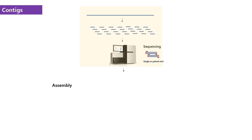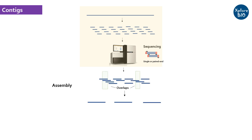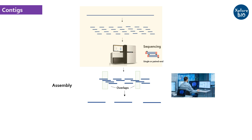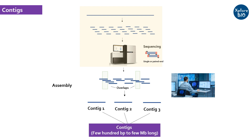The next step is to assemble these reads. The short reads are assembled to form a larger sequence based upon the overlapping regions of individual reads. This involves extensive computational power and tools to assemble the sequences. This way, we get bigger genomic sequences termed as contigs. Contigs are much larger than the reads and may range from a few hundred bases to a few kb or mb long, without any missing sequence information or gaps.